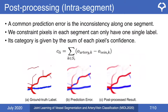We handle two types of errors in post-processing. The first is intra-segment errors: a common prediction error is inconsistency along one segment. We constrain pixels in each segment to have only one single label, assigned based on a confidence score obtained from the individual pixels of the segment. Here is a visual example of intra-segment correction.